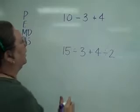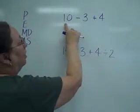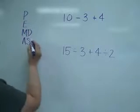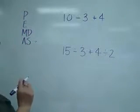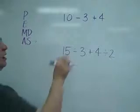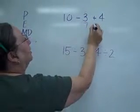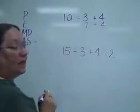A couple more examples for you. Now notice here I only have addition and subtraction. And remember when you only have addition and subtraction, you're going to do from left to right. So I've got 10 minus 3 is 7, plus 4 is 11.